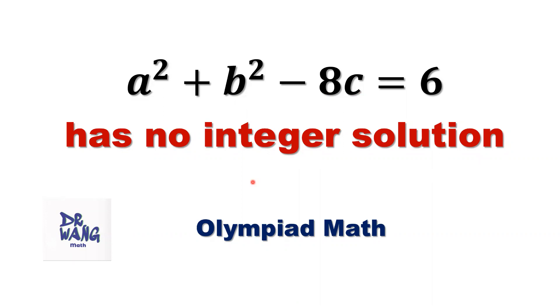The basic idea is the following. If this equation has an integer solution, then we can find a contradiction.